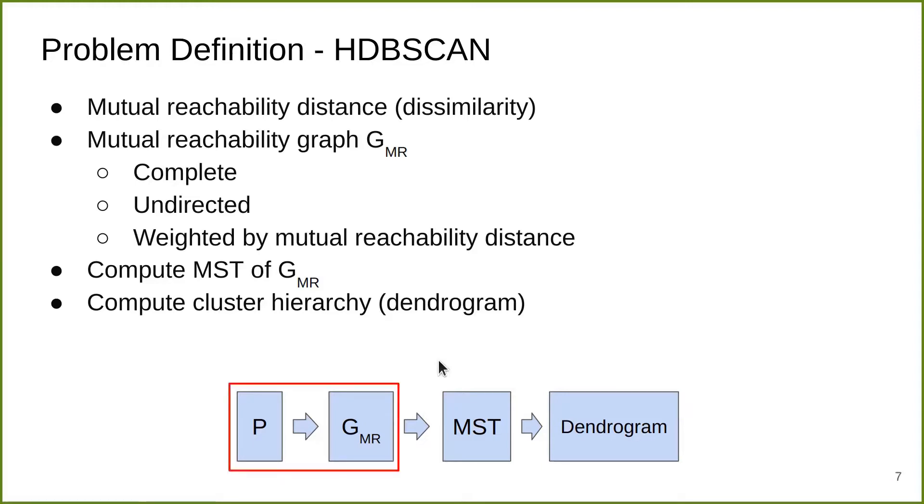Let's start with the first step, which is converting dataset into a graph. We need to define the measure of dissimilarity.